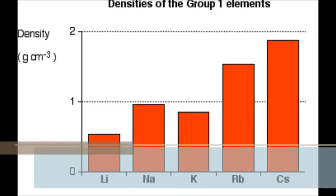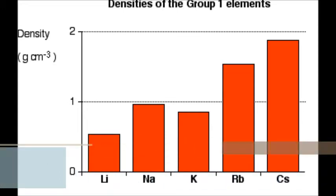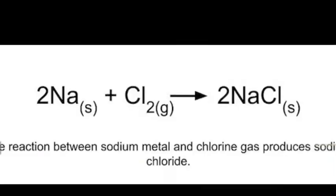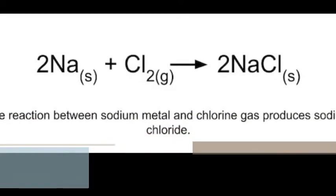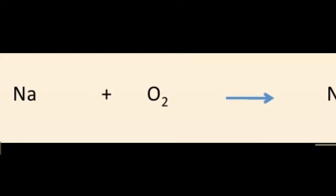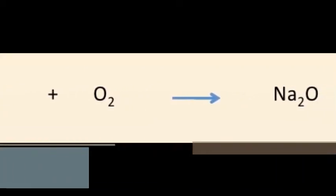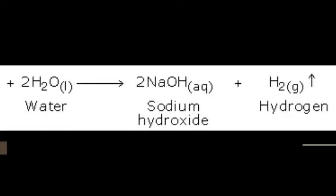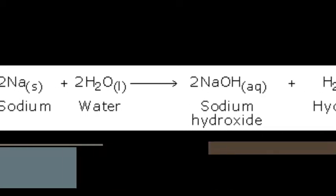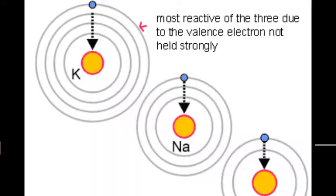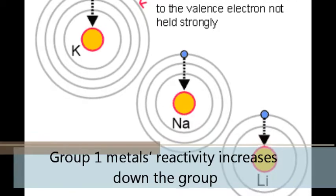Lithium, sodium, potassium flow on water. Group 1 metals react with chlorine gas to form metal chloride. Group 1 metals react with oxygen to form metal oxide. Group 1 metals react with water to form metal alkali. Reactivity increases down the group.